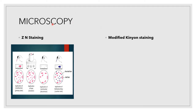A smear is prepared from sputum, dried, and after fixation, subjected to ZN staining. Strong carbol fuchsin is applied, the slide is heated, then decolorization with acid alcohol or 20% H2SO4 is done, and finally methylene blue is applied as a counter stain. In modified Kinyoun staining, no heated carbol fuchsin is needed as more phenol is added — this is a cold method with the same results.